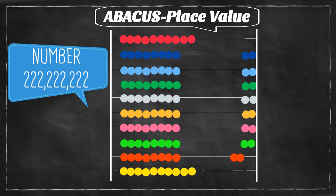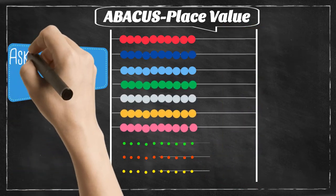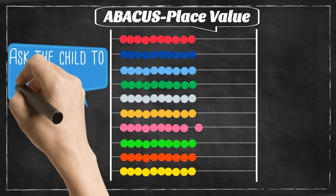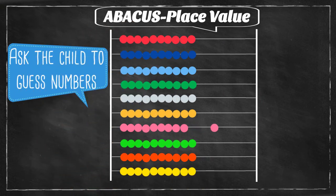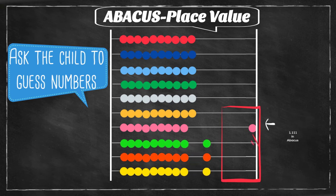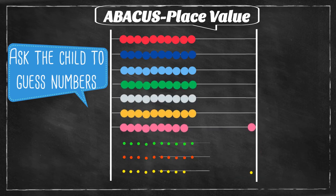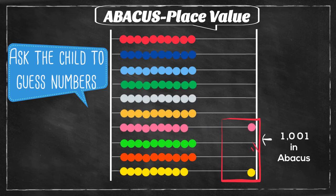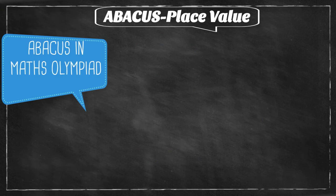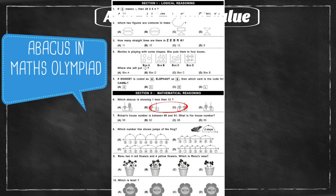We can even move the beads ourselves and ask the child to guess the number. Show these combinations and ask them to identify the number — for example, this one is 1000, this combination is 1111, and this is 1001. Try different combinations at home, as abacus and mental maths is really common in maths olympiads these days.